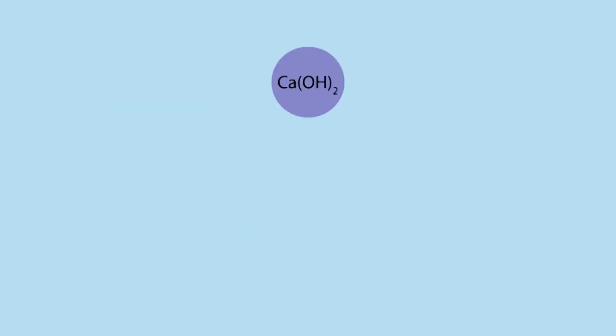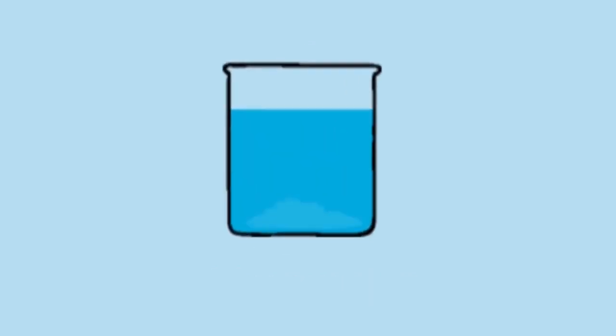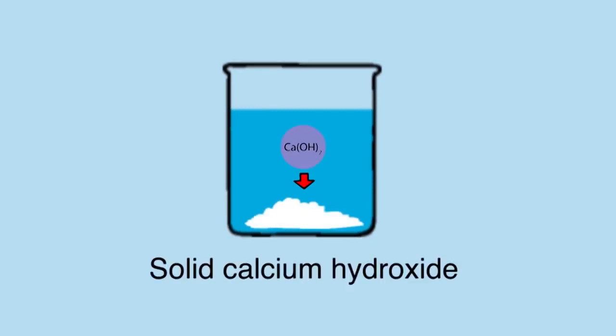Calcium hydroxide is mildly soluble in water. The solution is known as lime water and is used to test for carbon dioxide. If you've ever looked closely at lime water, there is a white precipitate at the bottom of the container. This is solid calcium hydroxide.